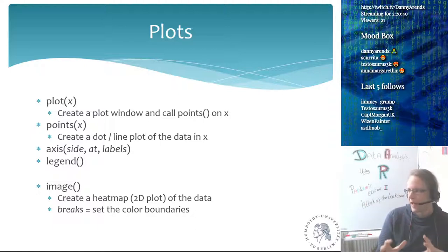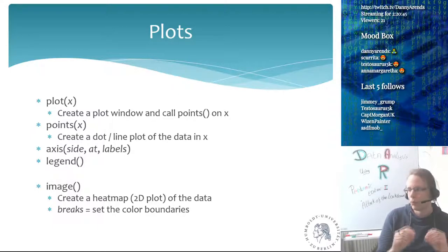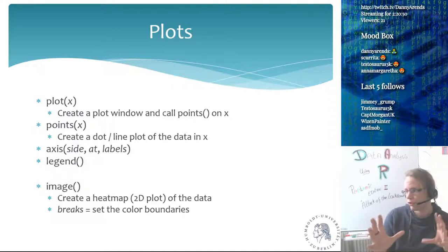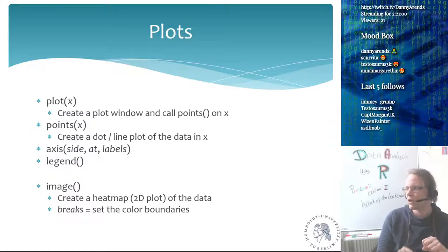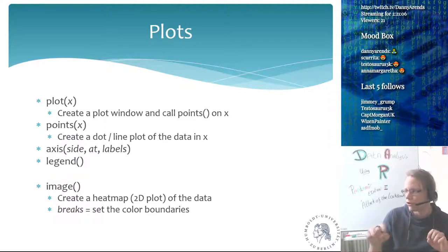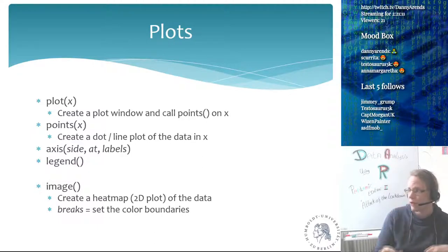If you want to add a second vector of numbers to an existing plot, you can use the points function. The plot function sets up the window and then calls points on your values. The points function is somewhat misnamed because it doesn't just create points — it can also create lines, stair plots, and other plot types. It is the main plotting function in R.